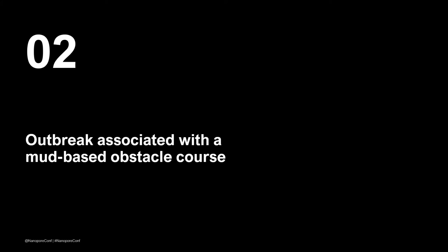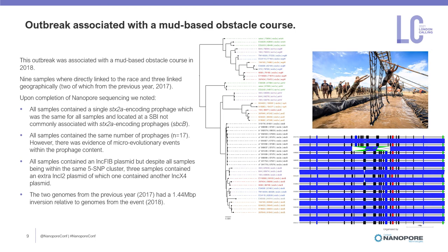The next outbreak was a mud-based obstacle course in 2018, from which we had 12 samples: nine directly linked to race participants and three geographically linked, of which two were isolated the previous year in 2017. Upon completion of sequencing, all samples contained an STX2A-encoding prophage but not at the site normally associated with STX2A. Despite all samples being very closely related, there was variation in plasmid content, including three extra samples containing an INC-I2 plasmid, and one also containing an INC-X4 plasmid. Notably, the two samples from 2017 had a 1.44 million base pair inversion relative to the 2018 genomes.